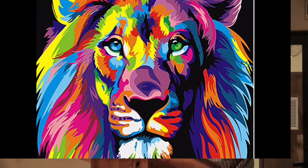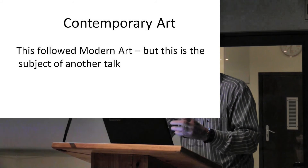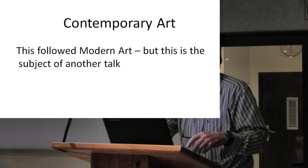This was coming to the end of our particular story — from this came contemporary art from modern art. This was really the end of the modern art era. In summary, modern art resulted as a revolt against the strict control of academic art. Experimentation became the name of the game, making it more and more exciting and, of course, very much more expensive. Contemporary art, which followed modern art, is something for another talk. Thanks very much.